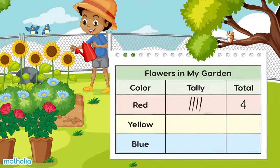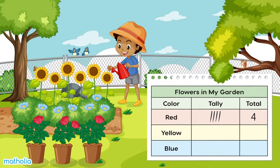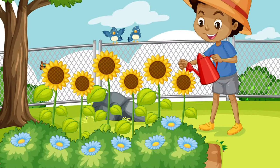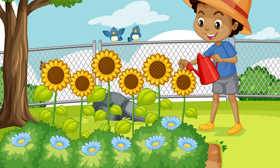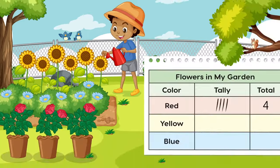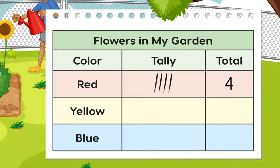What about the yellow flowers? There's one, two, three, four, five, six yellow flowers. On the tally chart we draw four marks in a row like this. Then we draw the fifth mark like this. This makes counting the marks easier because they are in groups of five. We draw the sixth mark separately here. Five and one make six.